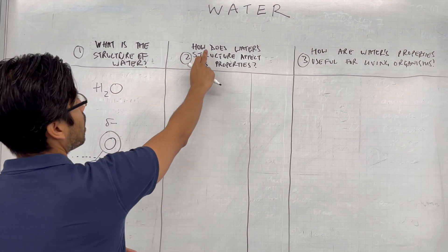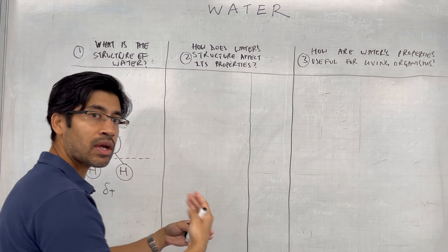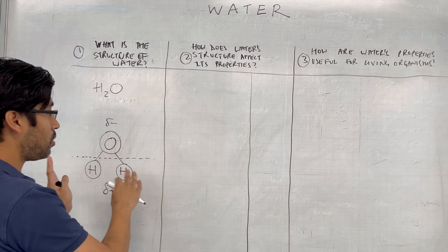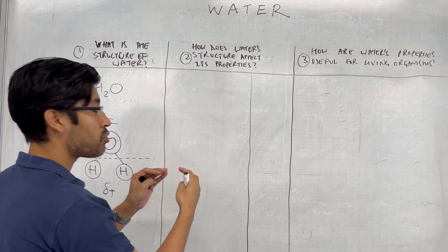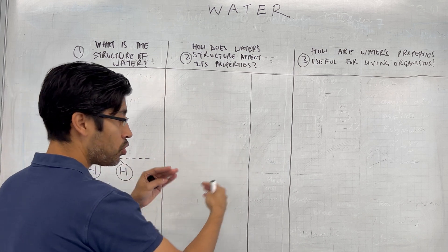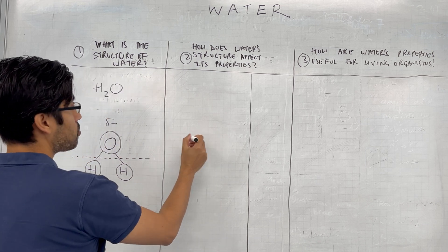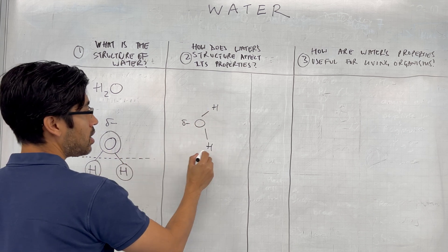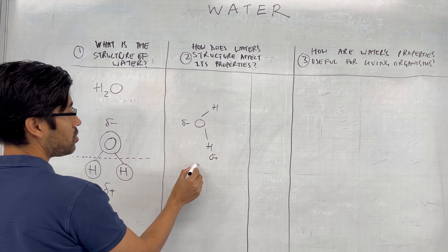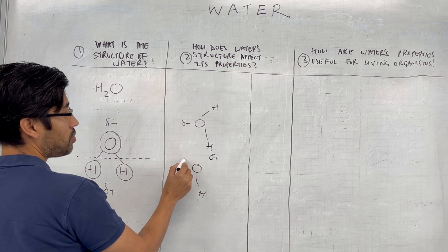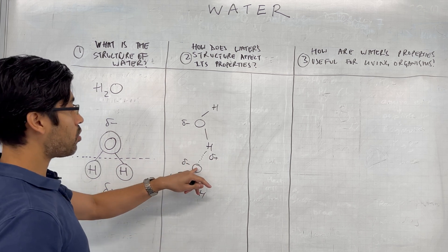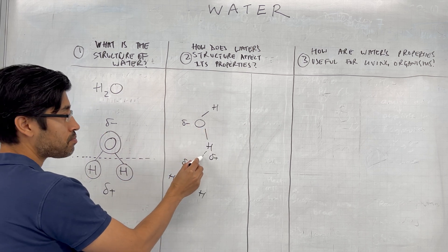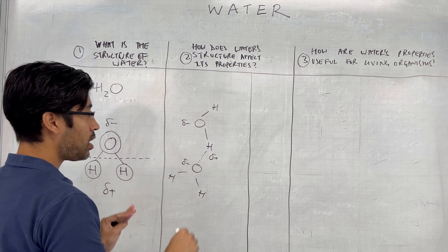How does water structure affect its properties? Because of the positive and negative sides of the water molecule, water molecules tend to attract each other. Those attractions are known as hydrogen bonds, which makes water's properties very unique compared to other substances. The oxygen of one water molecule is partially negative and the hydrogen is partially positive, so a hydrogen bond forms between the oxygen of one water molecule and the hydrogen of another water molecule.